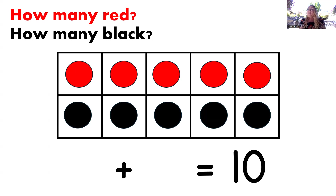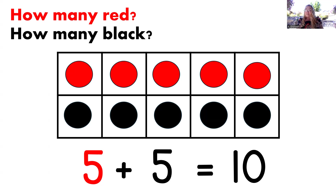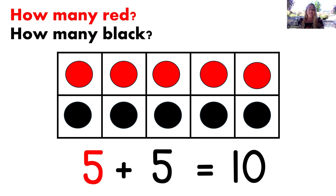How many dots are red now? Yes, five. And how many dots are black? Yes, five. Let's read that equation: five plus five equals 10. Wonderful.